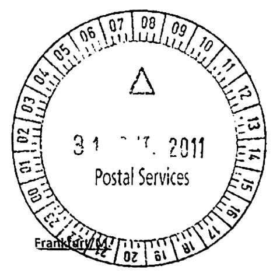A timestamp is a sequence of characters or encoded information identifying when a certain event occurred, usually giving date and time of day, sometimes accurate to a small fraction of a second. The term derives from rubber stamps used in offices to stamp the current date, and sometimes time, in ink on paper documents, to record when the document was received.